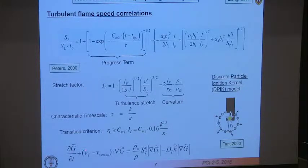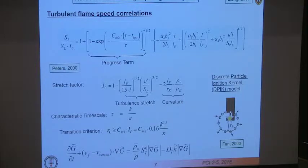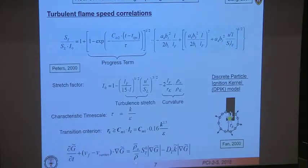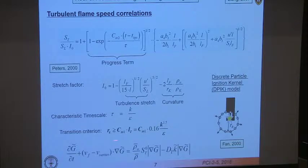The G equation is a level set equation where G equals zero is the flame location. We solve this partial differential equation, which includes convective terms on a moving grid — hence the vertex velocity. The turbulent flame speed drives the propagation of the G equation, along with the density ratio between unburnt and burnt mixture, and a term involving the curvature of the flame front, where the turbulent diffusivity also appears.